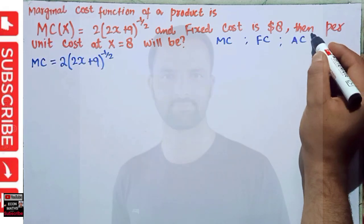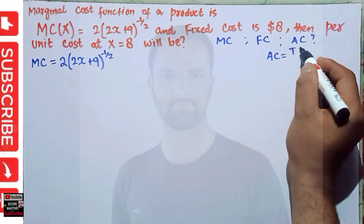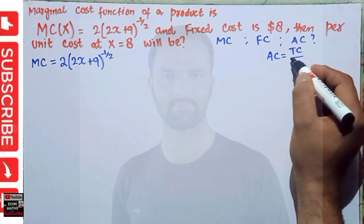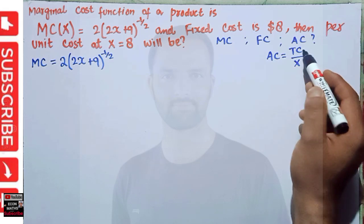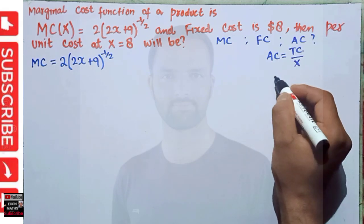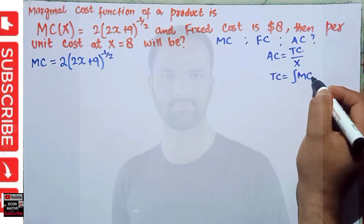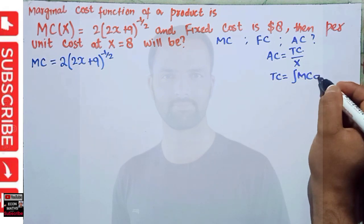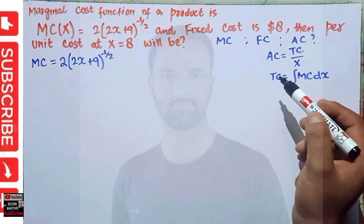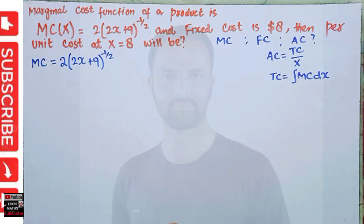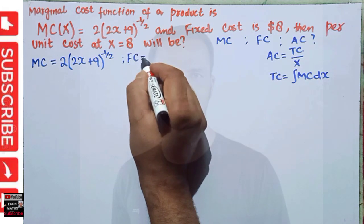We have to find the per unit cost, which is the average cost. Average cost is simply equal to total cost upon quantity x. That means we need to find the total cost. Total cost is simply the integral of the marginal cost with respect to quantity — we need to integrate the marginal cost function with respect to quantity to get the total cost.